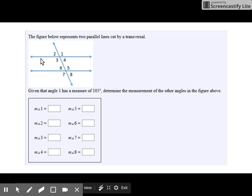In this video, we have a pair of parallel lines and a transversal. We're given the measure of one of the angles, angle one, and asked to find the other seven angles.